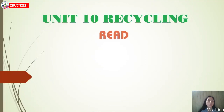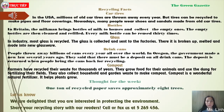We have just finished the first topic. For the next topic, we will read another paragraph: Recycling Facts. There are many types of waste garbage we can recycle — for example, car tires, bottles, glass, drink cans, and compost. We will listen and get information from the following paragraph.